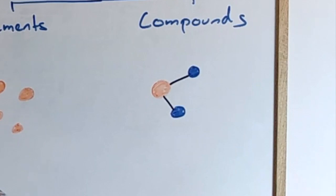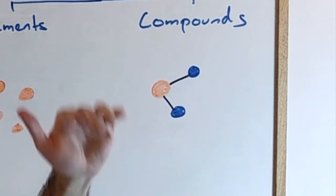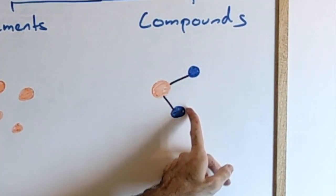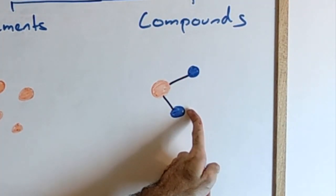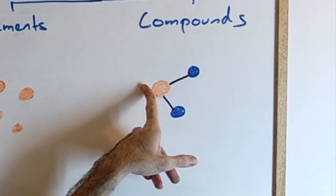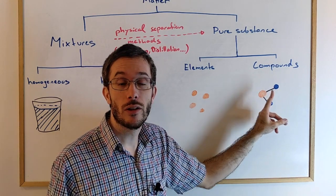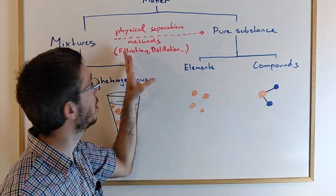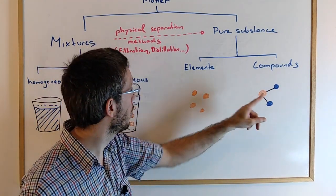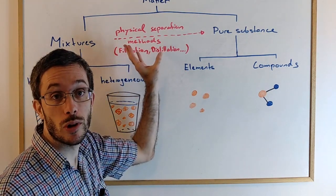A compound, for example, water, if we could zoom in a lot, would contain more than one element. For example, water, each water molecule has two hydrogen atoms that are attached to one oxygen atom. However, they are attached in a way that you cannot separate them with physical methods. You could use chemical methods but not physical methods to separate them.